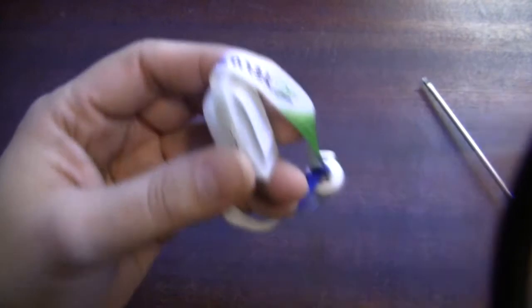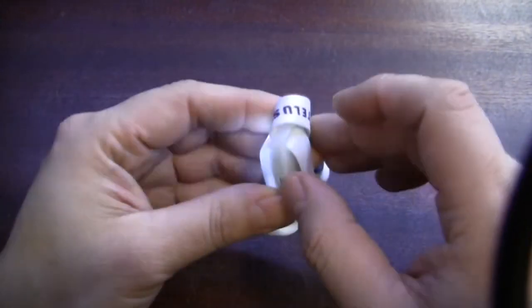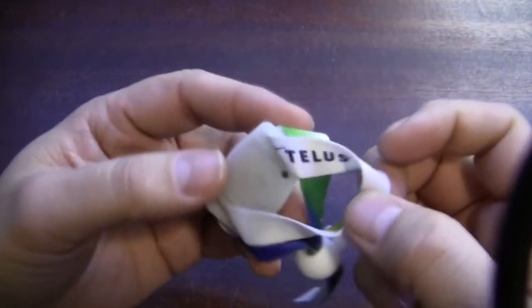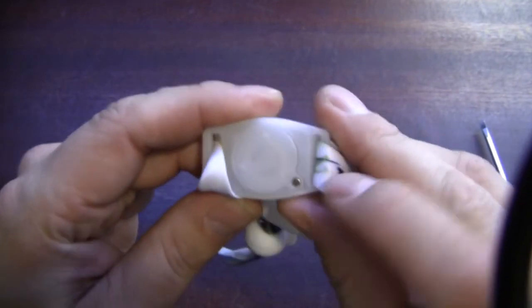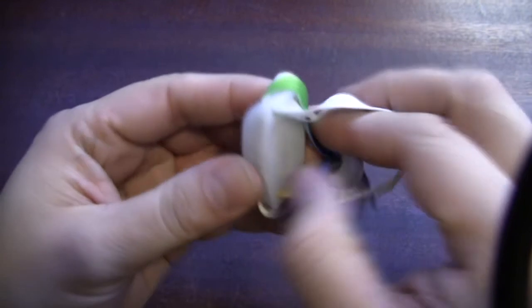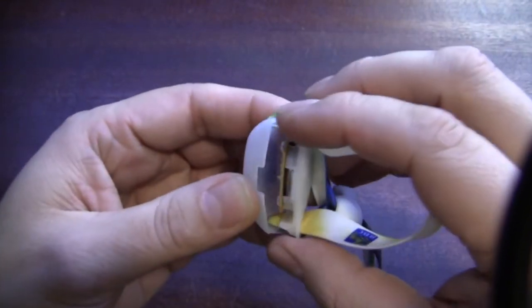But let's take a look. Actually comes apart pretty—oh, I see, there's a battery compartment on the bottom. Oh interesting, so you could actually change that battery out if you wanted to, but it looks like with this wristband off this can actually come out.